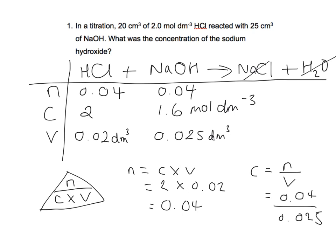So that is your answer. So what is the concentration of the sodium hydroxide? The answer is 1.6 moles dm to the minus 3. I hope you found that helpful. Obviously, leave any comments below, and I'll see you guys next time. Bye.